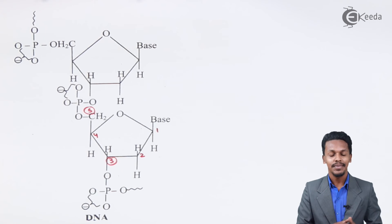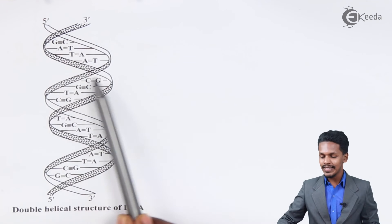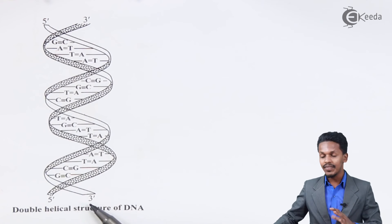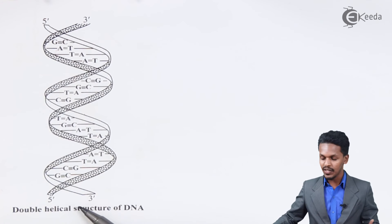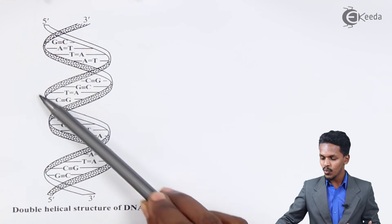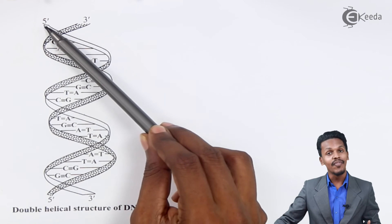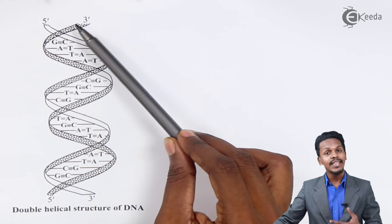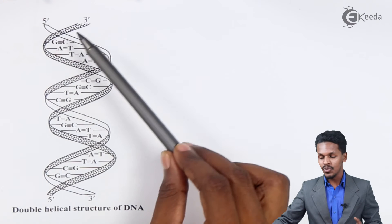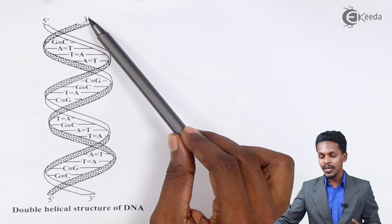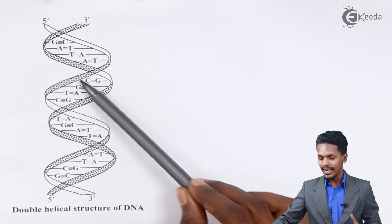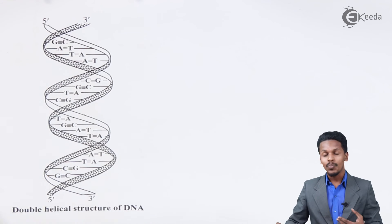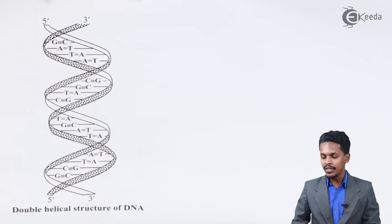The DNA has a double alpha helix structure. If one strand runs from carbon number 3 to carbon number 5, then the other alpha helix also runs from carbon 3 to carbon 5, so both strands are complementary to each other.